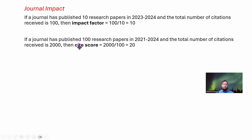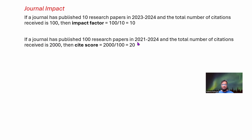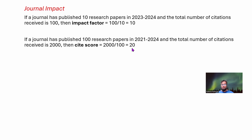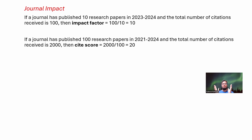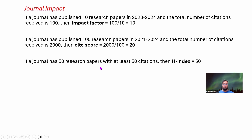CiteScore is more stable because it is calculated over a wider span of years. If a journal has published 100 research papers from 2021 to 2024 and the total number of citations received is 2000, then the CiteScore is 2000 divided by 100, which equals 20. So while impact factor is based on more recent impact over two years, CiteScore is based on more overall impact over four years.